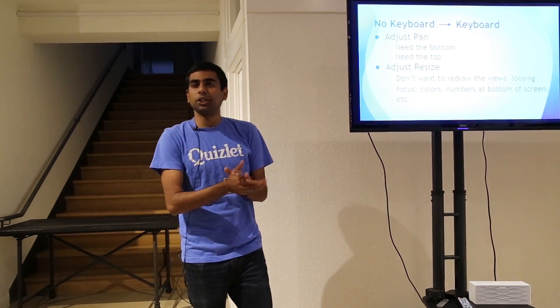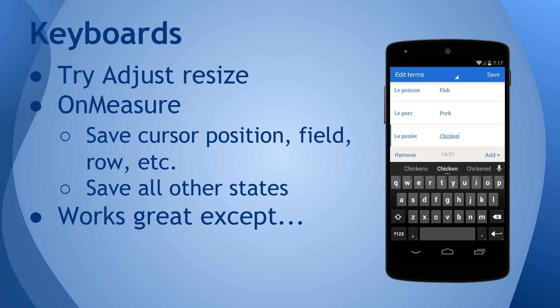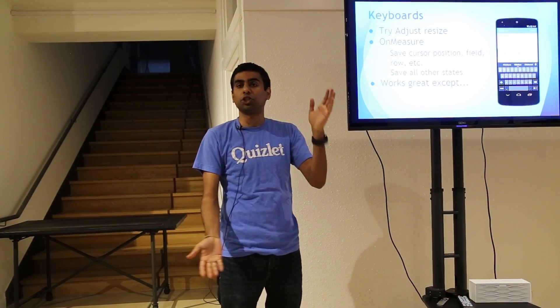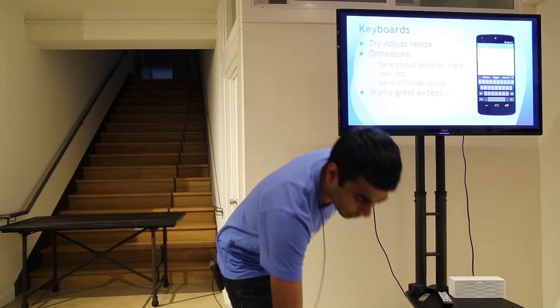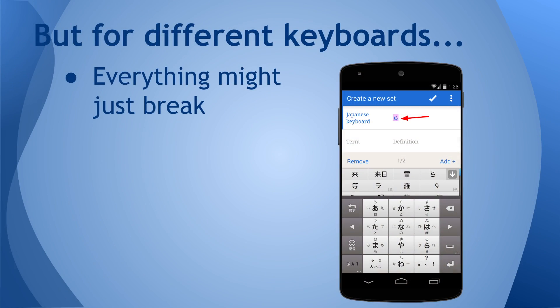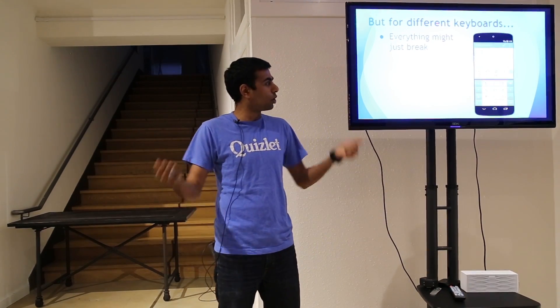So we said okay, adjustResize is what we're going to do. We wanted to still save states when the keyboard is coming up. So we said let's override onMeasure — the onMeasure method gets called all the time, and we can say: if the screen size is changing drastically, it's probably a keyboard change. So what we should do is save your cursor position, save the field you're in, save the row you're in, and save all kinds of state. Then when onMeasure is finished, plop all the stuff back in. That works great — except, of course, for all the other kinds of keyboards out there.